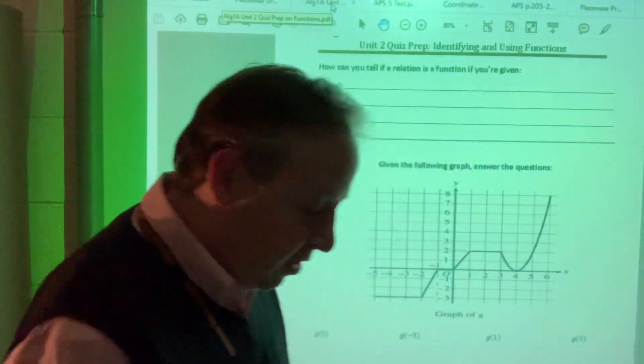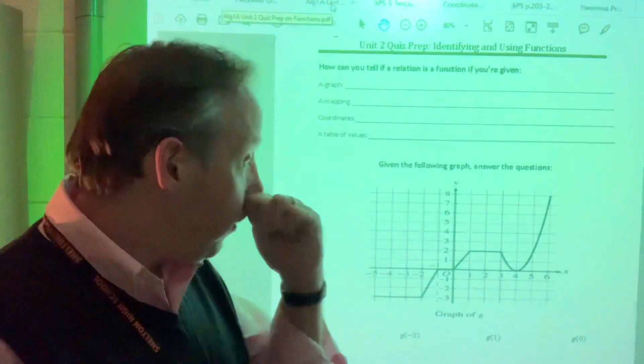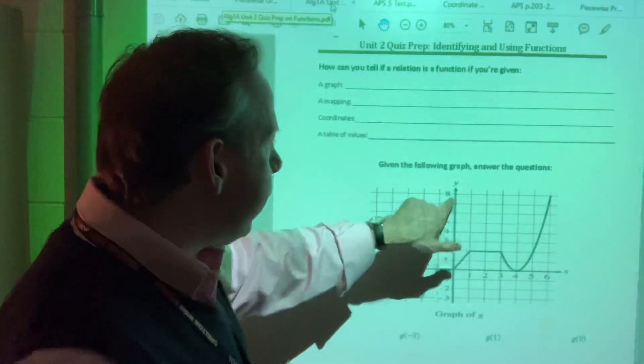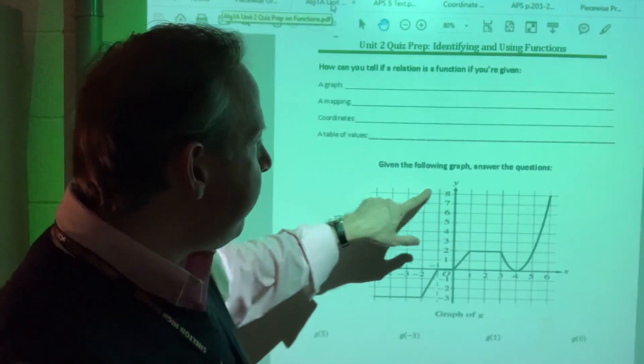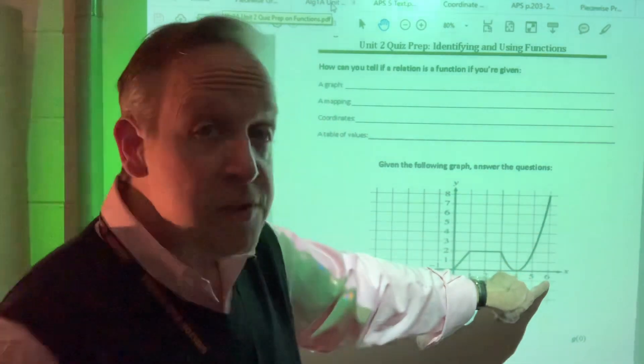This one says g of x equals eight. So what value of x will get you a y value of eight? Well, eight is all the way up here. Now, the graph only hits eight right there and that's an x value of six.